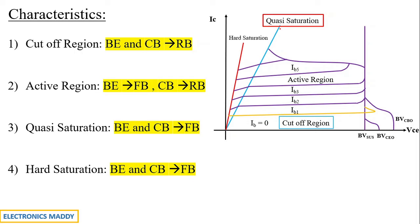In quasi saturation mode there are some advantages. The on-state resistance is much lower, and in addition the device can be turned off quickly. As a result, it can be used for high-frequency applications. It can be turned off quickly because it has not yet reached hard saturation mode — since recovery is faster from quasi saturation, the frequency of operation is much higher.